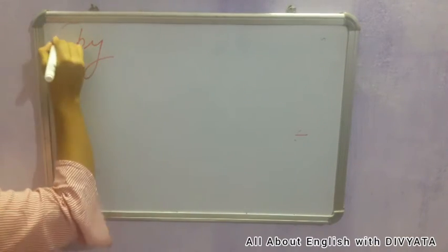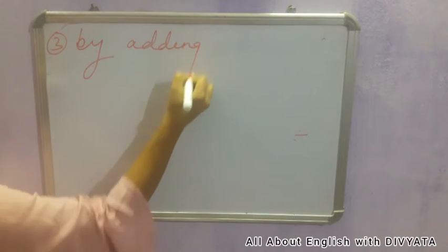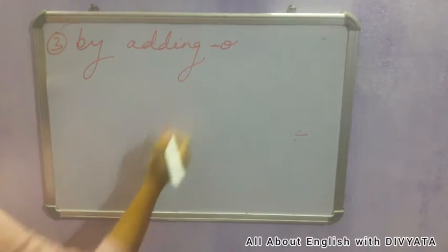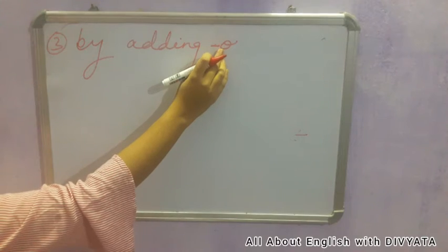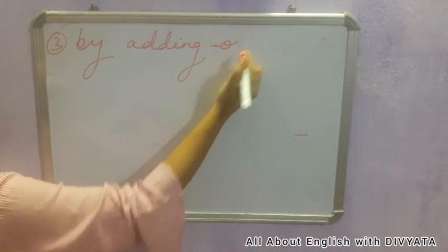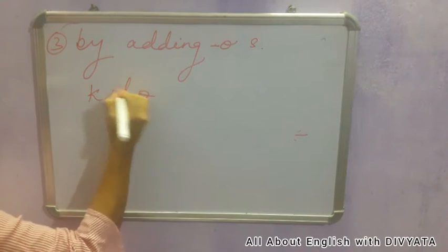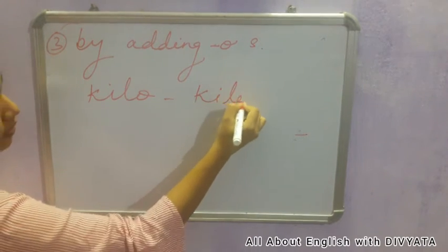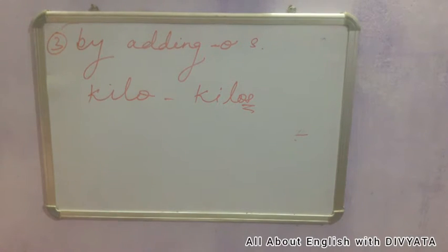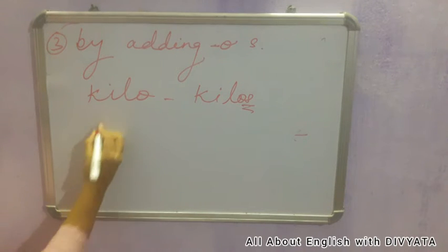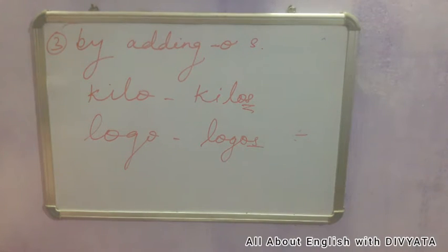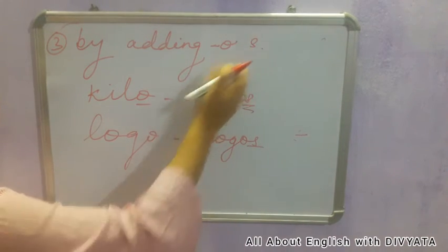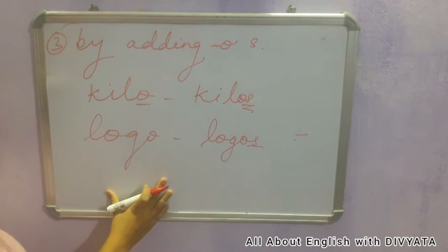The third rule applies to words ending in 'o' — we just add 's' to them. For example, kilo becomes kilos, and logo becomes logos. There are many words which have 'o' at the end, and we simply add 's' at the end of the word to make the plural noun from the singular noun.